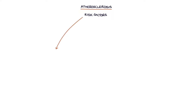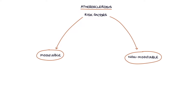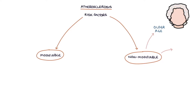Let's talk about the risk factors for atherosclerosis. It's important to break the risk factors down into modifiable and non-modifiable risk factors. We can do nothing about the non-modifiable risk factors, but we can do something about the modifiable ones. The non-modifiable risk factors are older age, family history, and being male.